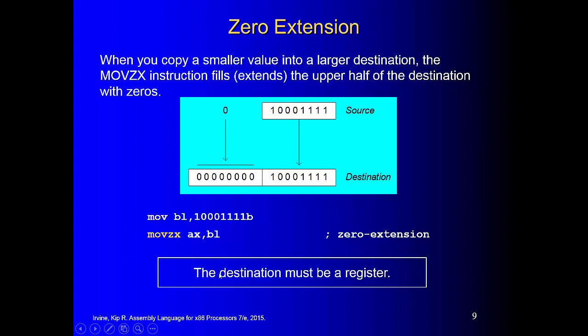The destination must be a register — AX is a register, so this is allowed. You cannot use a variable as the destination.